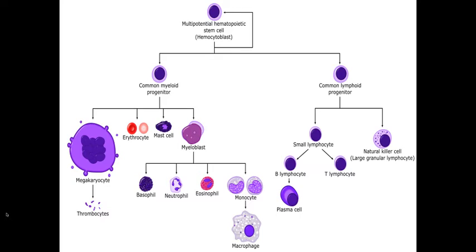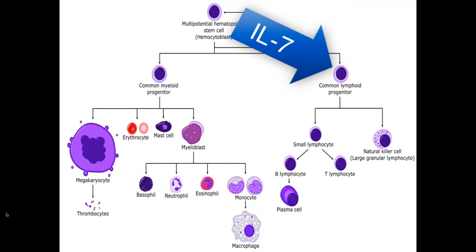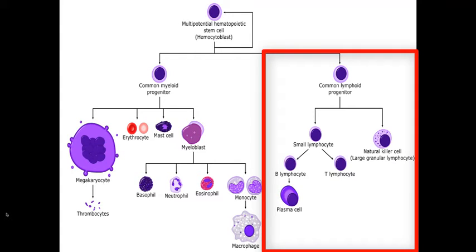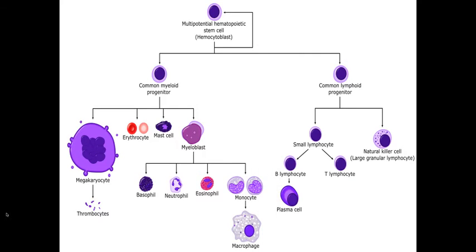When there is a need for T lymphocytes, these stromal cells start to secrete a cytokine called interleukin-7. The function of interleukin-7 is to stimulate the parenchymal cells — your hematopoietic stem cells — to make an extra copy of themselves first, and then differentiate into the common lymphoid progenitor lineage, which would then through the help of cytokines differentiate into the small lymphocyte lineage and natural killer cell lineage.